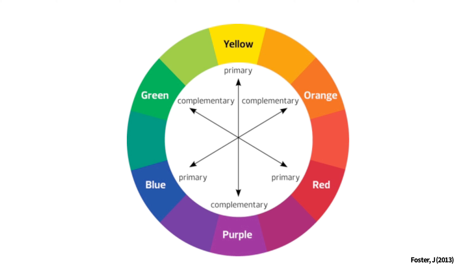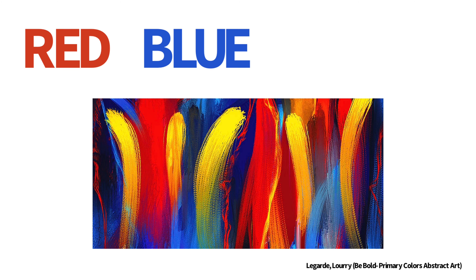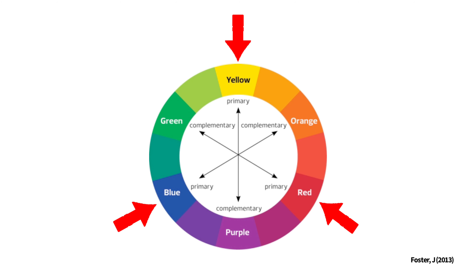The color wheel has your basic colors all in order on this pretty little wheel. All of our color schemes will be on this wheel. Our first color scheme is primary colors: red, blue, and yellow. Primary colors are your most basic colors — this means you cannot mix any colors together to get these colors, but instead you mix these colors together to get your secondary colors.